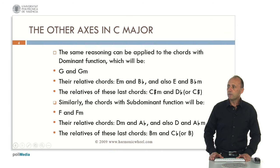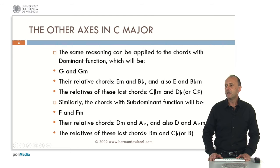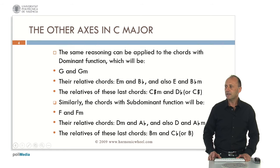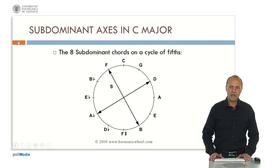If we repeat the process for the subdominant chord, which is F major, we find its parallel F minor, the relative chords D minor and A-flat major, its parallel chords D major and A-flat minor, and the relatives of these last chords B minor and C-flat major or B major. We can represent these eight chords on a cycle of fifths as well, and we again find two axes.